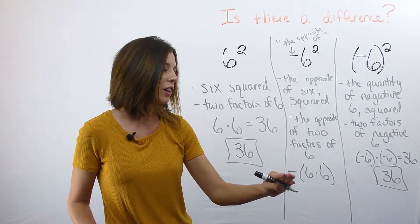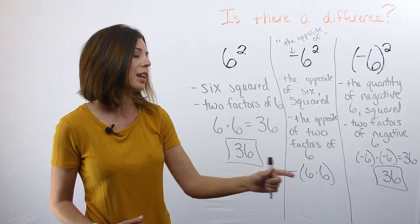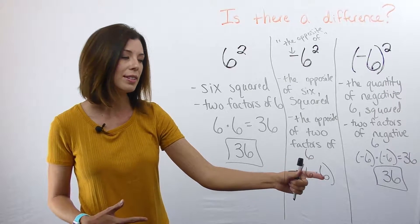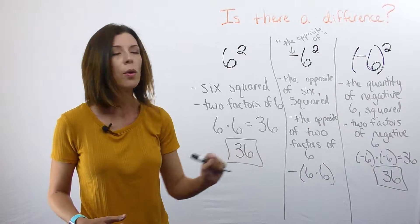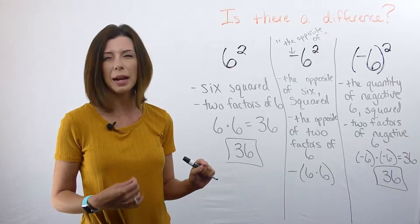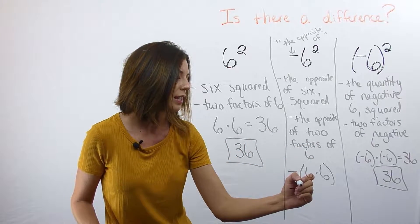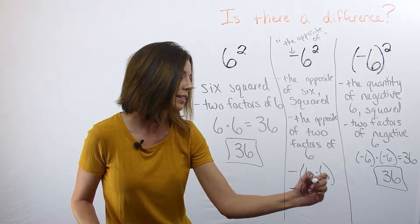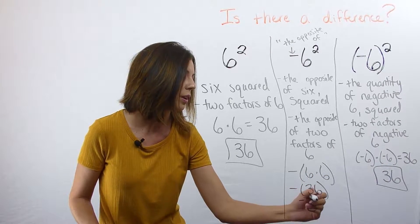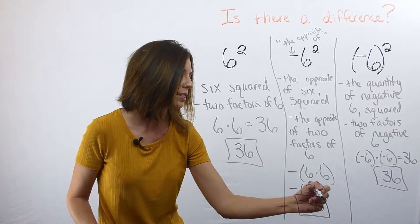And when I think of this in terms of order of operations, I know that I need to do my parentheses or my grouping symbols before I multiply times that negative there. So I'm actually going to write -(36). And then I can simplify this down to -36.